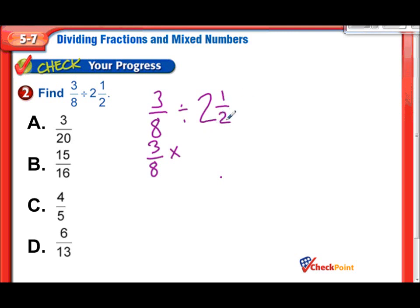So 2 times 2 is 4, and 4 plus 1 is 5. So really, 2 and a half is 5 halves. So really this problem is 3 eighths divided by 5 halves. Now we can do our keep, change, flip. So it's important to first change that mixed number into an improper fraction before we do our keep, change, flip.